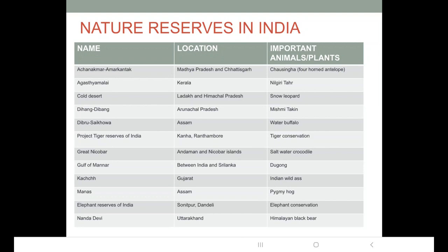The next nature reserve is Dihang Dibhang, located in the northeastern state of Arunachal Pradesh. The Mishmi Takin, which is a goat-like animal, is the important animal here. Then Dibru Saikhova nature reserve is present in the state of Assam.